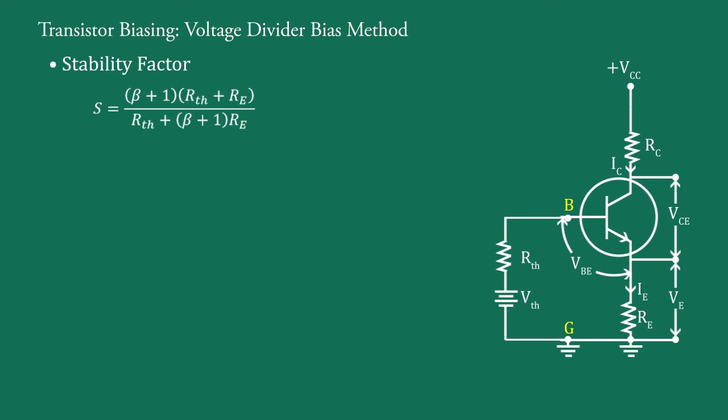Dividing numerator and denominator by RE, therefore we get S equal to beta plus 1 into RTH upon RE plus 1 upon RTH upon RE plus 1 plus beta.